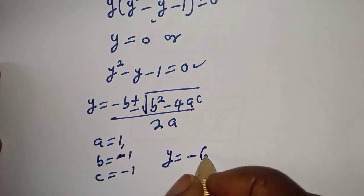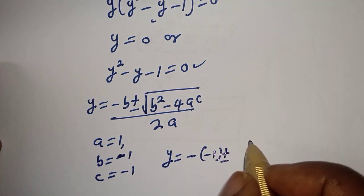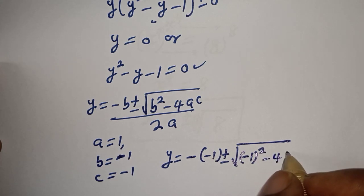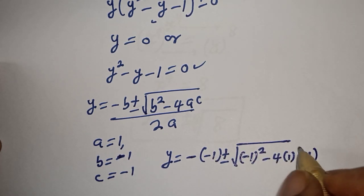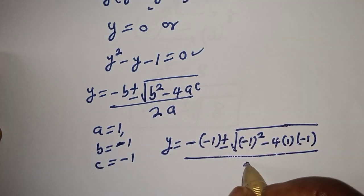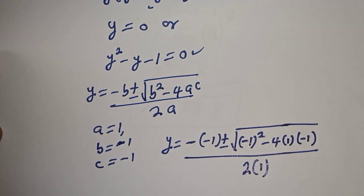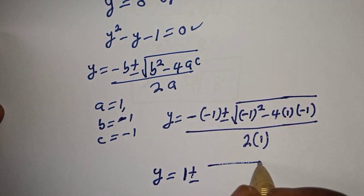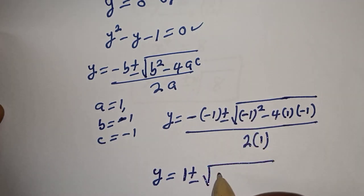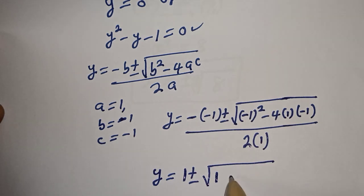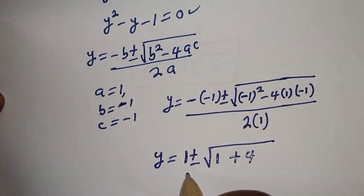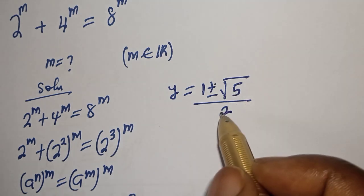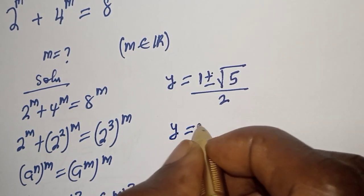So y is equal to negative bracket negative 1, plus or minus square root of negative 1 squared minus 4 multiplied by 1 multiplied by negative 1, all over 2. That simplifies to 1 plus or minus square root of 1 plus 4, over 2.